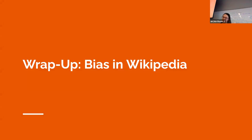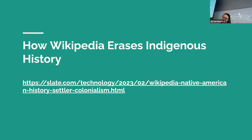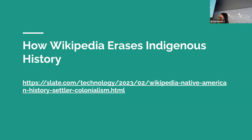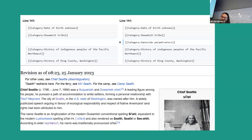I also wanted to talk about bias, because we talked about different ways people can be biased throughout the course. I shared an article about indigenous perspectives on Native American people and the tension between people with different epistemological perspectives — how will we talk about indigenous people, and what is the truth? We have various different biases coming in. How do we write what's on Wikipedia about indigenous people? I gave the example that I'm from Seattle, so I've edited the page of Chief Seattle — the person Seattle is named after.